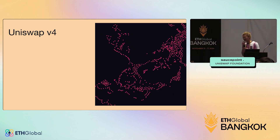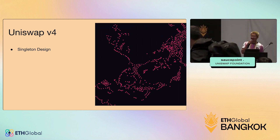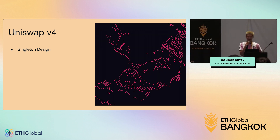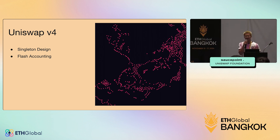V4 is more than just hooks. It has a singleton design, which means it's a single contract where all the tokens are held and custodied, versus the v3 design. This is a lot more gas efficient, and because of this singleton design we have this thing called flash accounting, or deferred balance accounting.